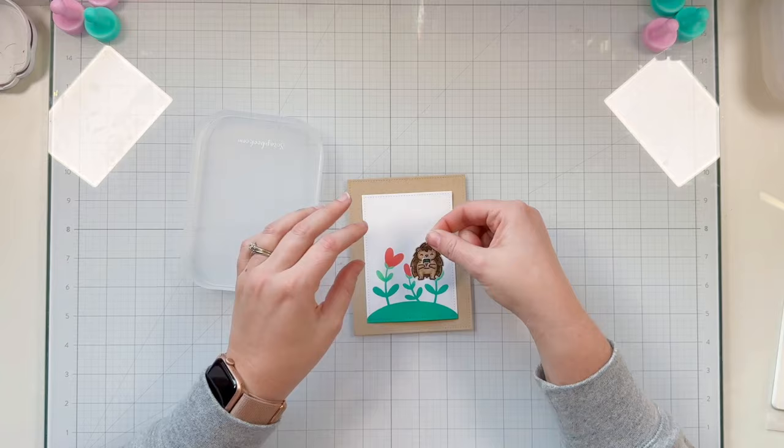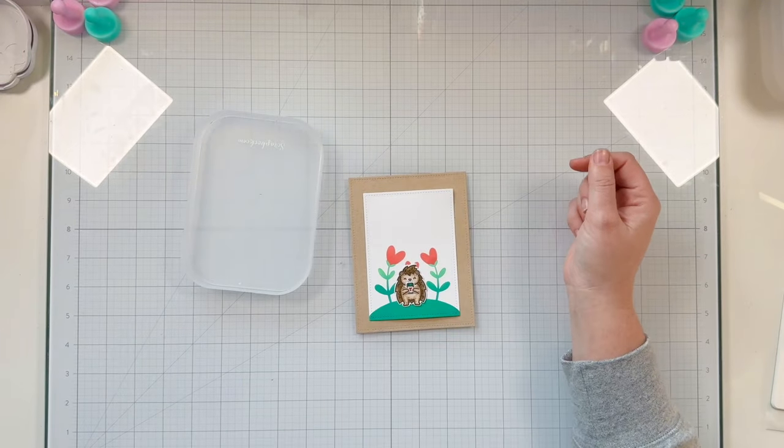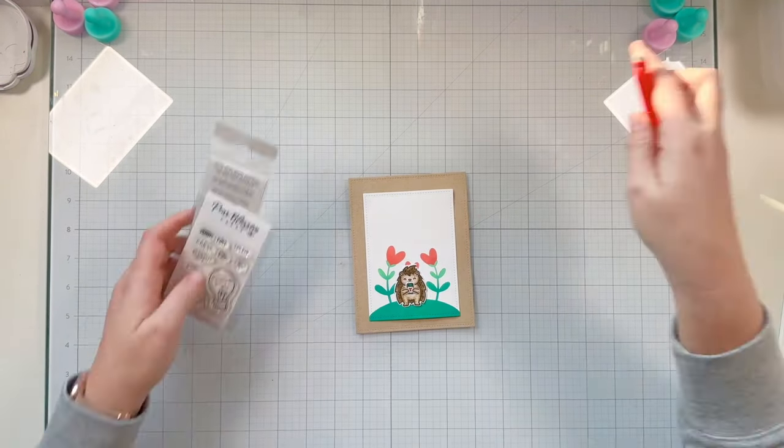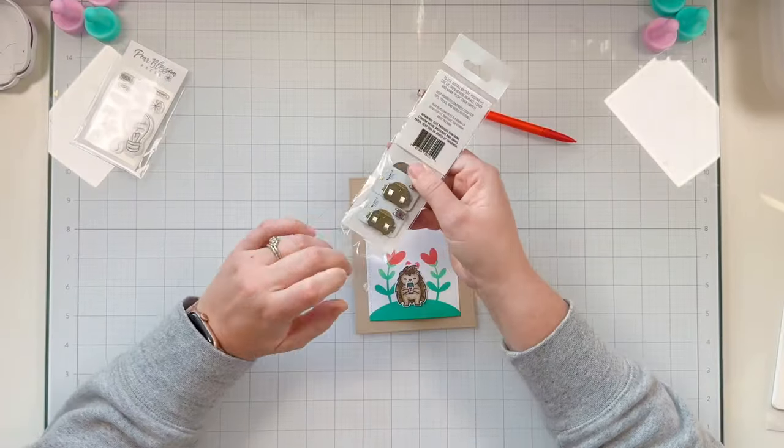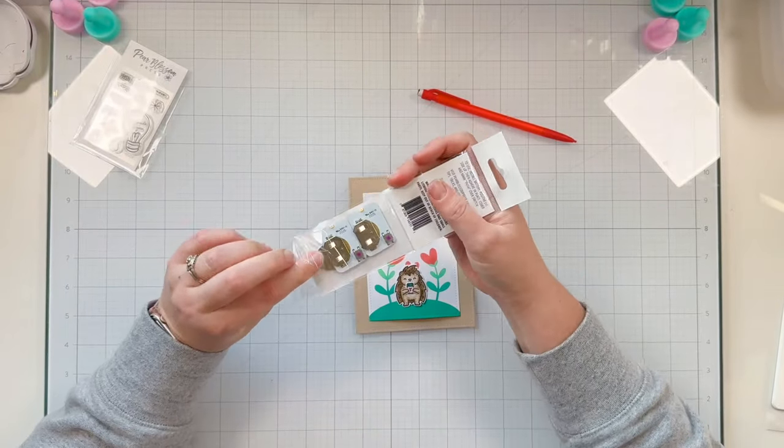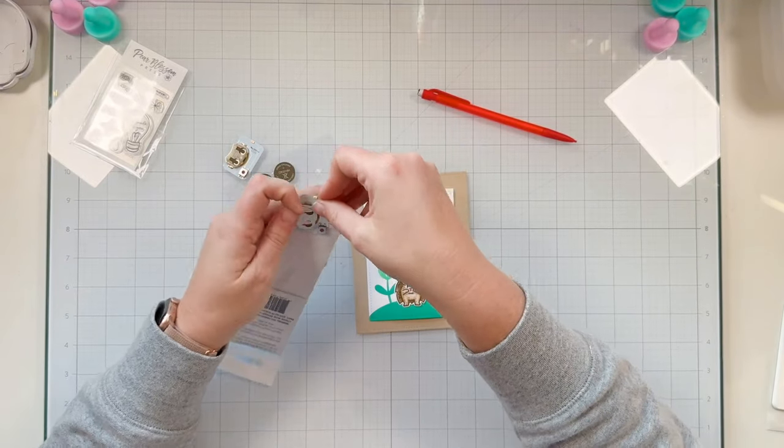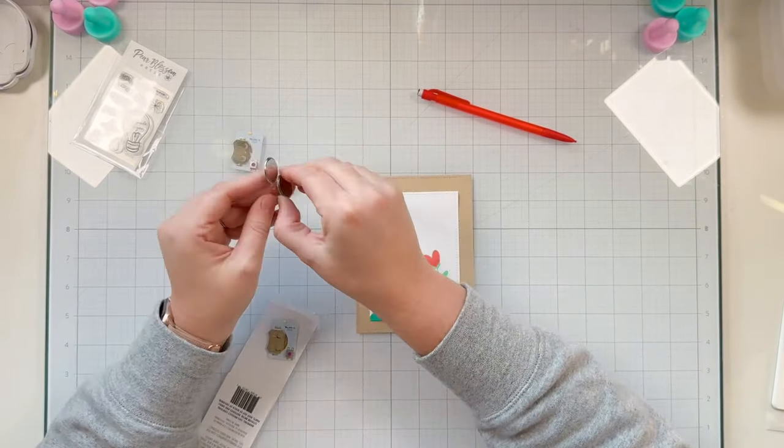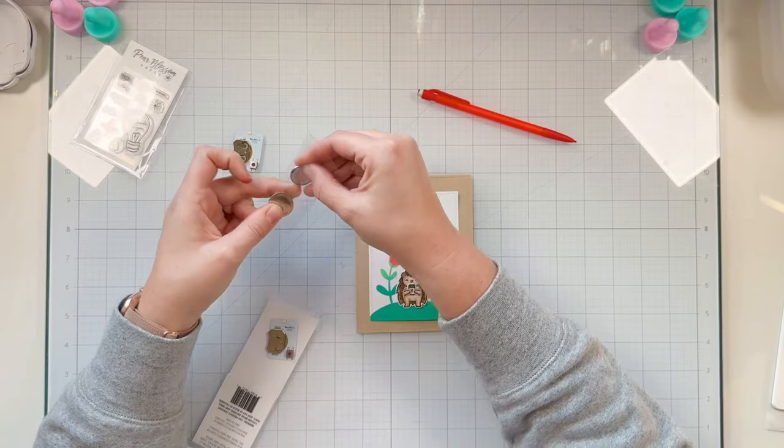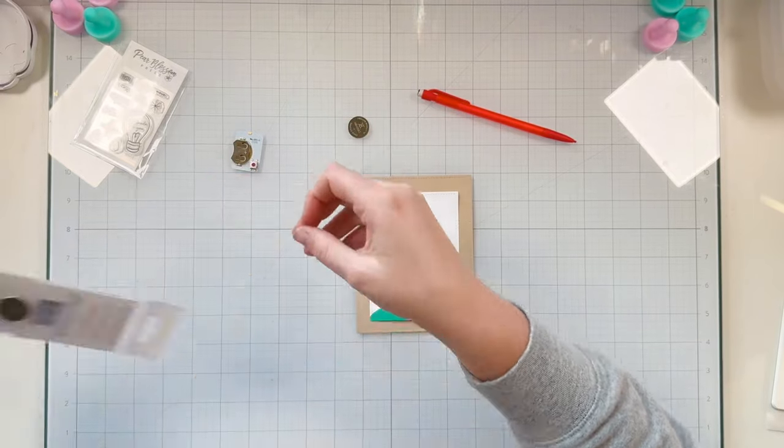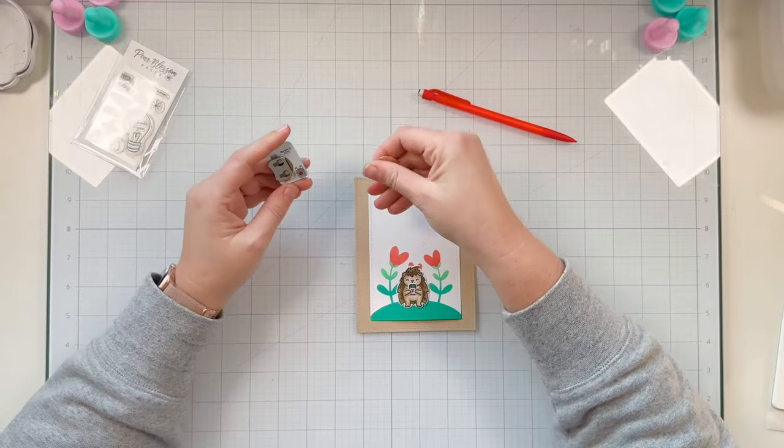I'm going to work on the placement of my porcupine on my hill and I'm going to grab my pencil so I know where to mark where I need to hole punch for my one light to shine through and also where I need to stamp the interactive sentiment like press here for my card receiver to know that the card will light up.